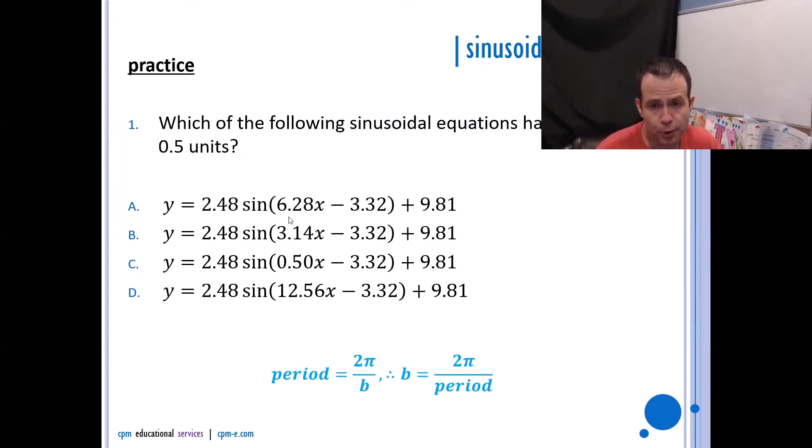2π divided by 3.14, I'm going to get 2. 2π divided by 0.5, I'm going to get around 12.56, and then 2π divided by 12.56, that's going to give me my 0.5. Okay, so my answer is d. d would give me a period of 0.5 units.